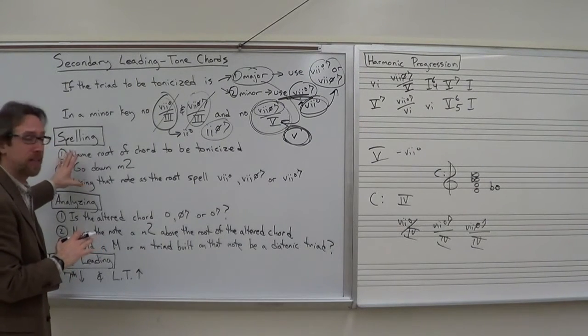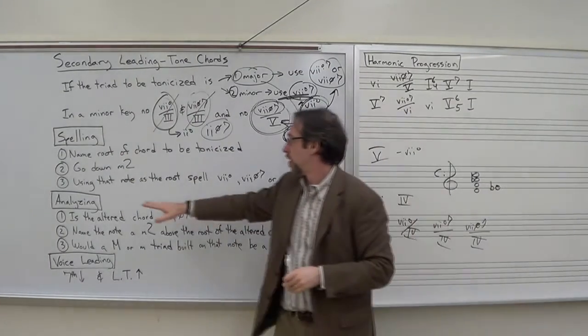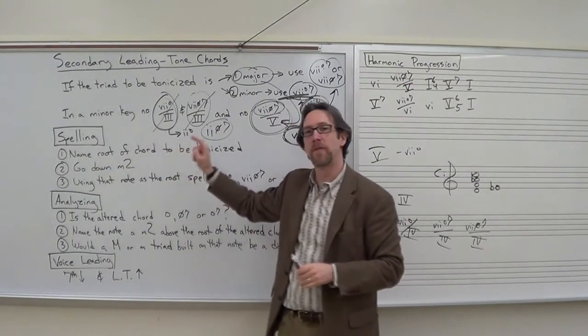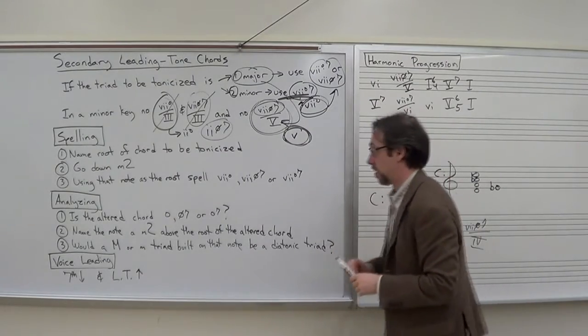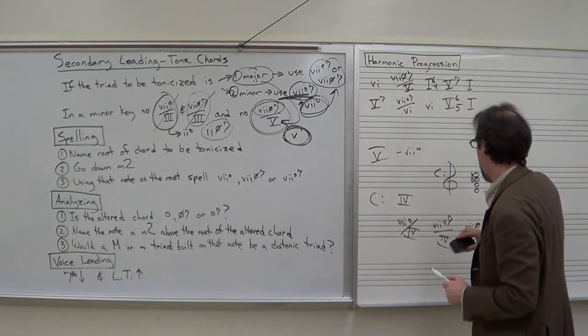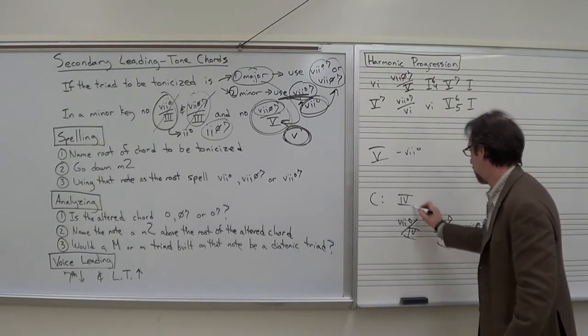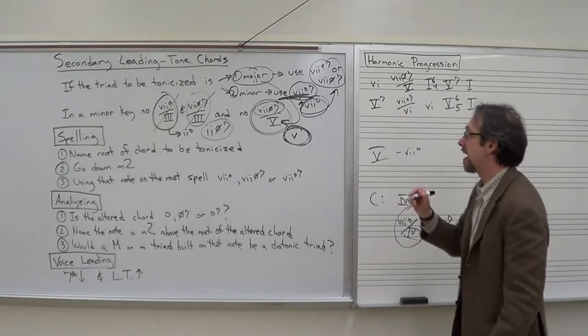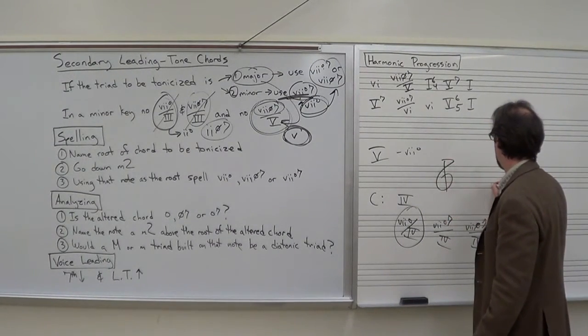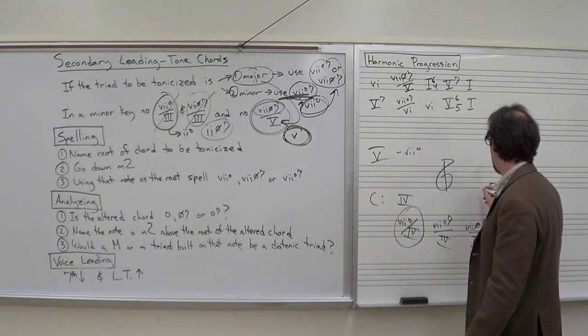We went over this really quickly, but spelling the secondary leading tone chords, here's the step-by-step process. If you are spelling it, you name the root of the chord to be tonicized. If we look at our example, we had C major, 7 diminished of 4. Name the root of the chord to be tonicized. If this is C major, we're going to say that root is an F. We then go down a minor second. Down a minor second from F is E.